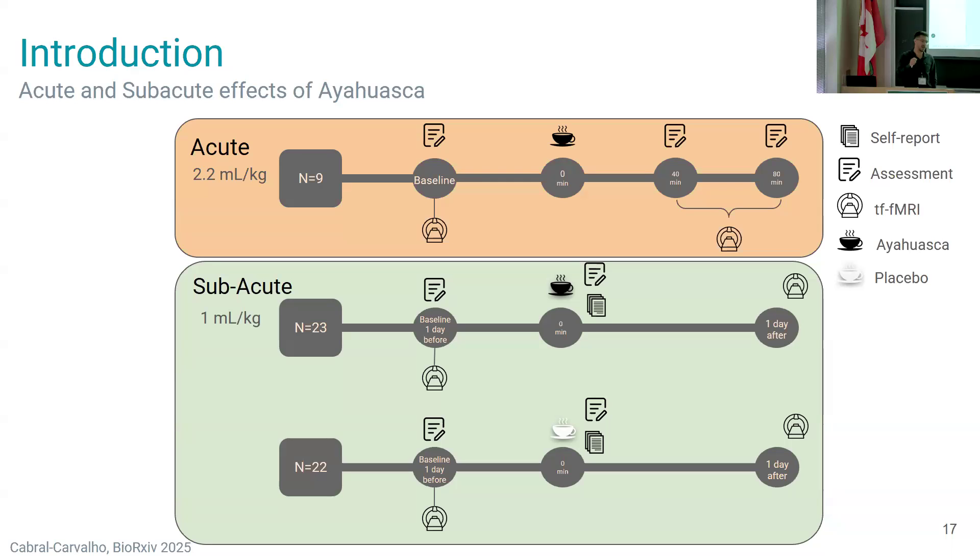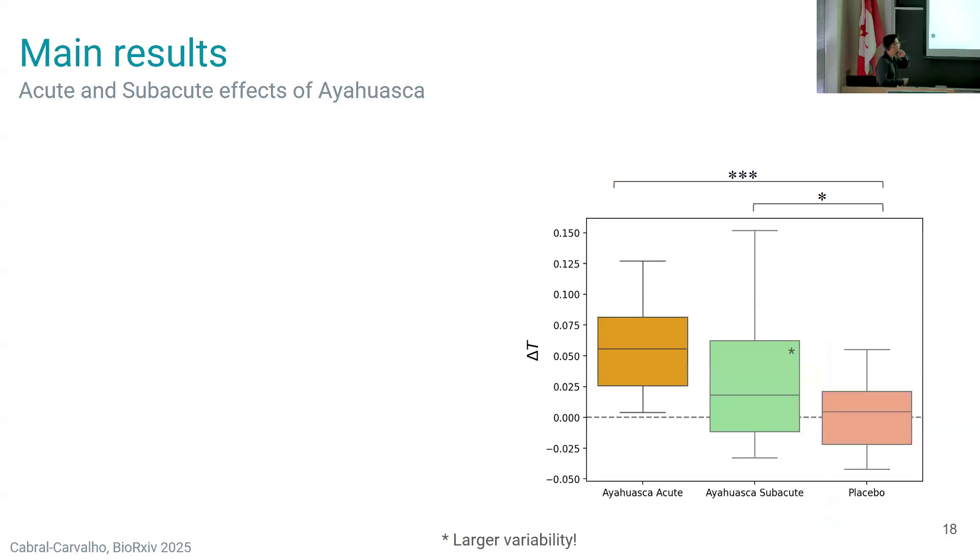During the acute effects we register the hallucinogenic rating scale, which is basically a psychometric scale that measures many dimensions of changes in cognition, emotions, and also change in other systems such as perception. This is the first result about the dynamics. In the y-axis we have the delta T, the difference...